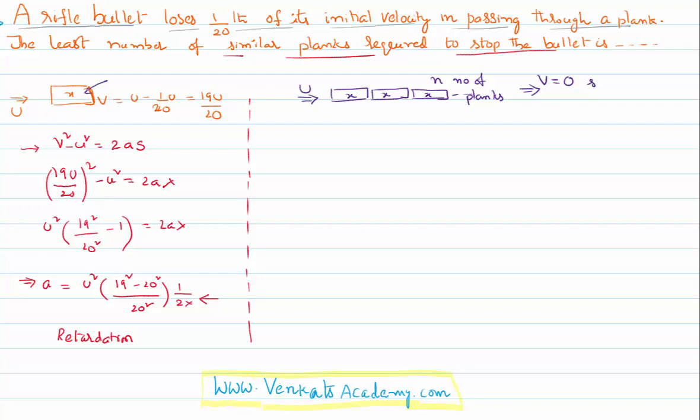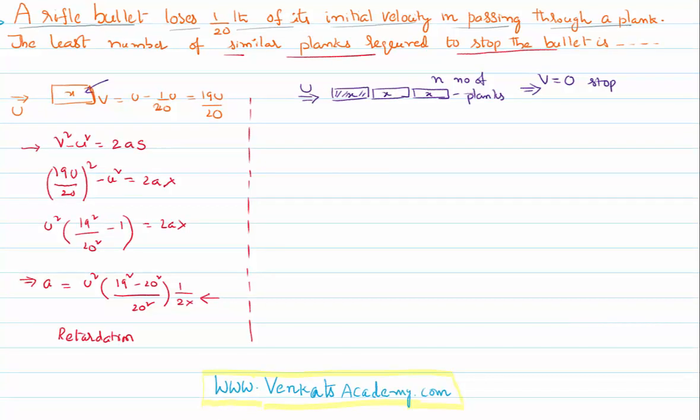So what is happening is finally the bullet is coming out with zero velocity, it's going to stop. So it is very clear if it has crossed one plank, distance covered is x. Two planks, 2x. n planks, nx.